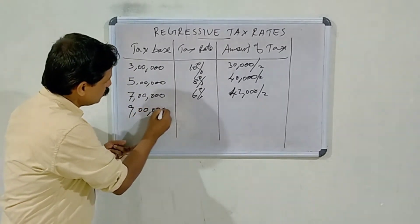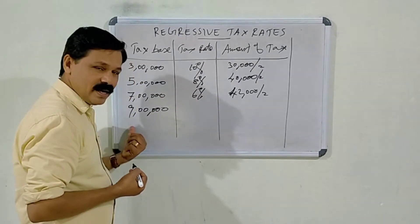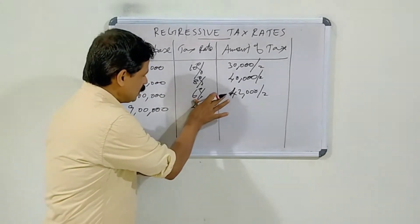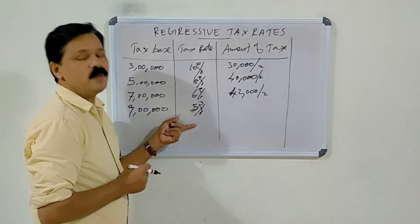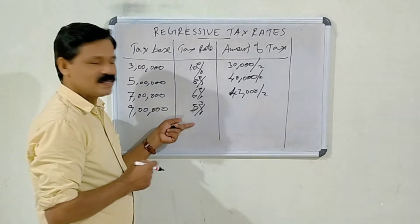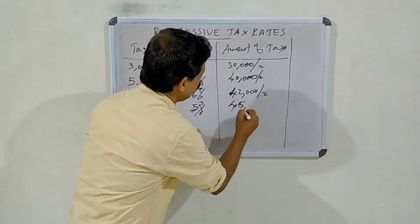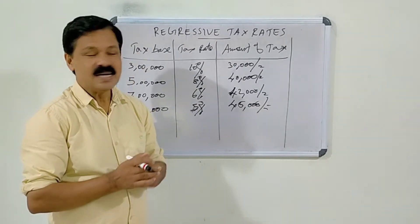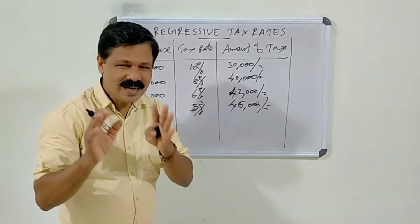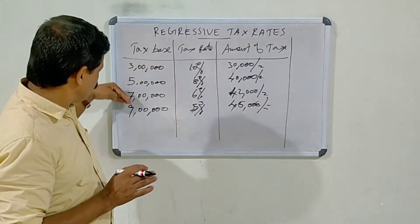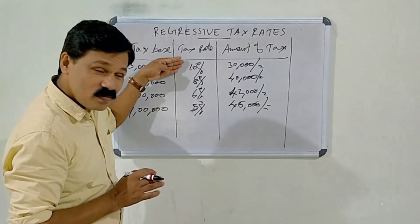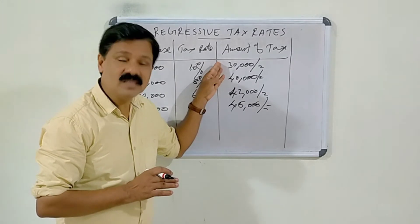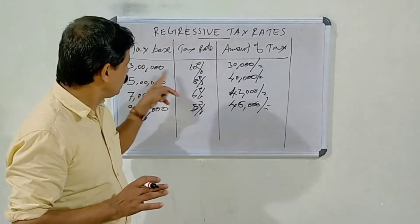Likewise, if the tax base or income of the taxpayer increases from 7 lakhs to 9 lakhs, the tax rate decreases further. As and when the tax base or income increases, the rate of taxation charged will be decreased. The amount of tax payable is calculated by multiplying the tax base with the tax rate.